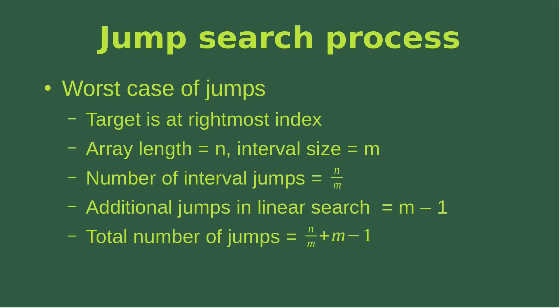It happens when the target is at the rightmost index of the entire array. At that time, the array length is equal to n, and the interval size is called m. If we have m and n, we can find out the number of interval jumps which is equal to n over m. After we have found the interval that contains our target, we have to do additional jumps one by one for the linear search process. The additional jumps required is m minus one. So the total number of jumps required to reach the target is equal to n divided by m, plus m minus one.